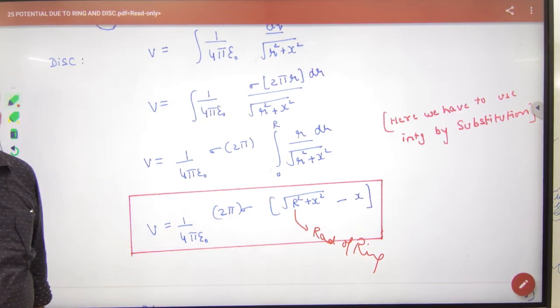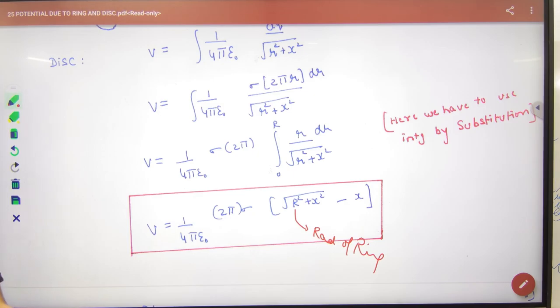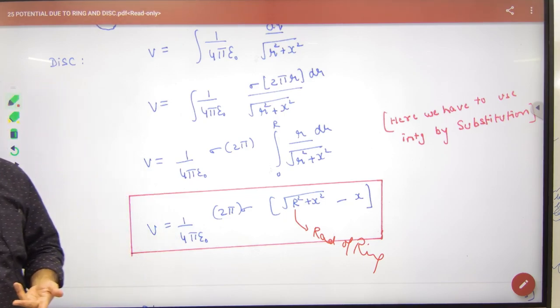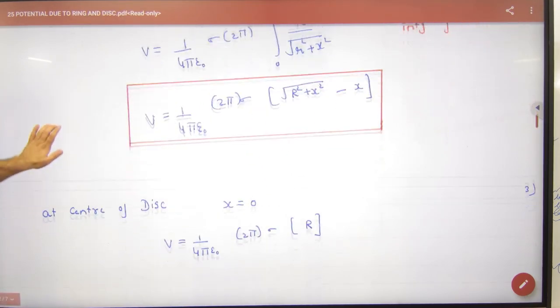What's the value of V? To find V at the center of the disc, put x equals 0. This is a special case - when x equals 0, you get V at the center.